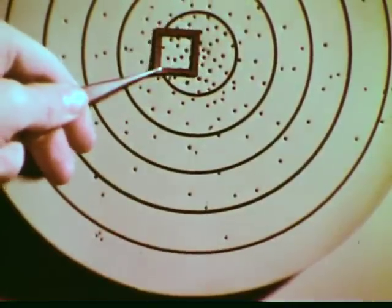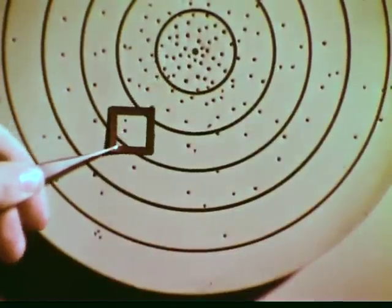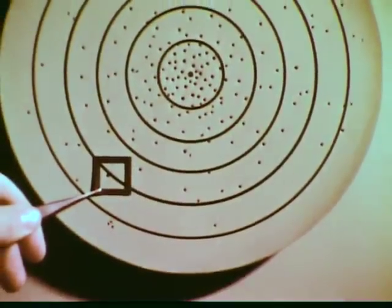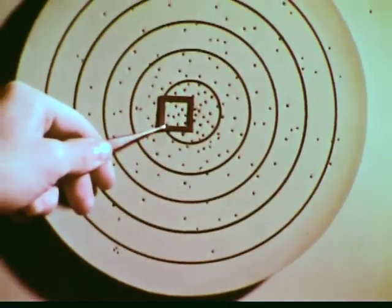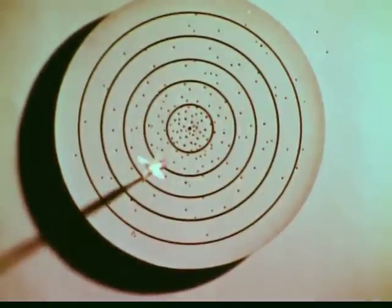These holes indicate the likelihood that the next throw of the dart will land in a given square centimeter. Where there are many holes, the probability is high. Where there are few holes, the probability is low. These observations allow us to conclude that the probability of the dart landing near the bullseye is much greater than the probability of it landing far away.